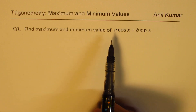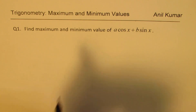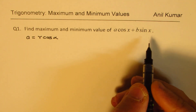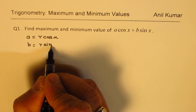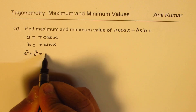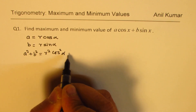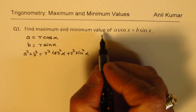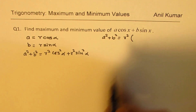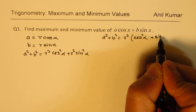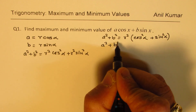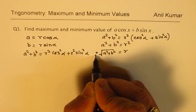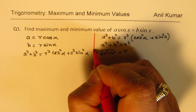In the very first question, we're taking the general formula a cos x plus b sin x and trying to figure out how to get the maximum. We make a substitution: a equals r cos α and b equals r sin α. In that case, a squared plus b squared equals r squared cos squared α plus r squared sin squared α, which simplifies to r squared, since cos squared α plus sin squared α equals 1. So r equals square root of a squared plus b squared.